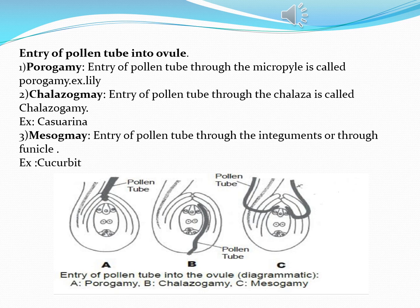There are three methods by which the pollen tube will enter into the ovule. The first one is porogamy, the second one is chalazogamy, and the third one is mesogamy. Porogamy means entry of the pollen tube through the micropyle region is called porogamy. Example: lily.